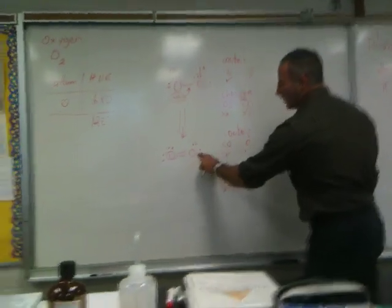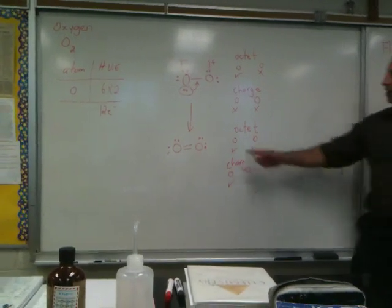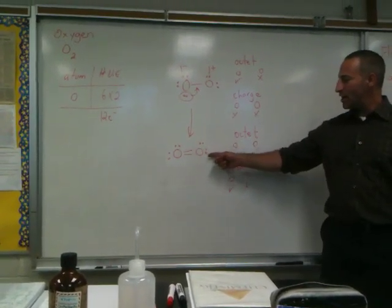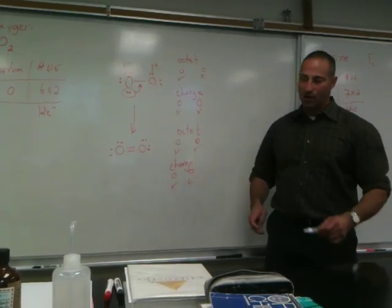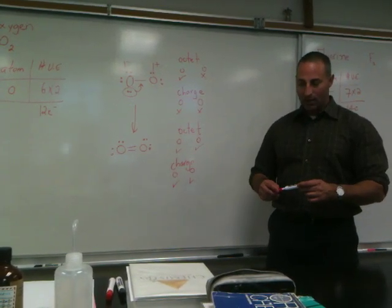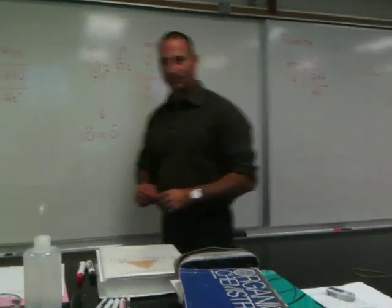So this is the actual Lewis structure of diatomic oxygen. It's got two lone pairs on each oxygen atom, and it's got a double bond. And actual experiments have shown that this is the structure of the oxygen molecule.